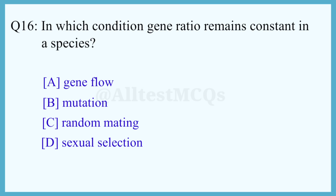Q16. In which condition does the gene ratio remain constant in a species? The correct answer is option C: Random mating.